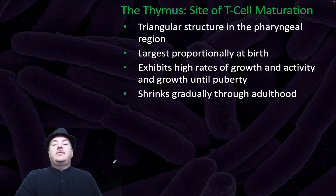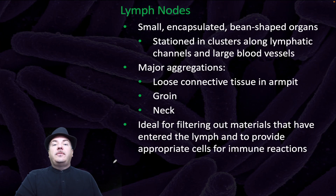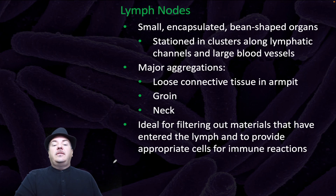The thymus is the site of T-cell maturation. It is a triangular structure in the pharyngeal region. It's largest proportionally at birth, exhibits high rates of activity and growth until puberty, and it shrinks gradually throughout adulthood. The lymph nodes are small, encapsulated, bean-shaped organs stationed in clusters along lymphatic channels and large blood vessels. Major aggregations can be found in loose connective tissues in the armpit, the groin, and the neck. They are ideal for filtering out materials that have entered the lymph and to provide appropriate cells for immune reactions.